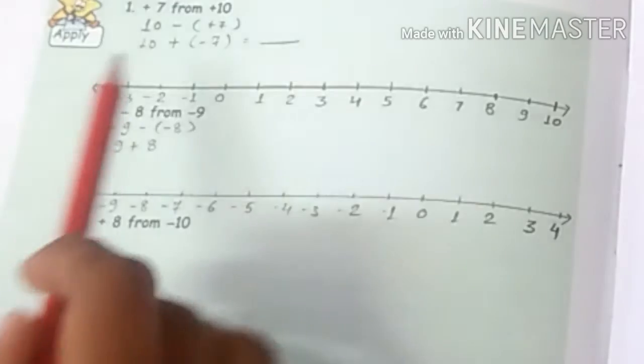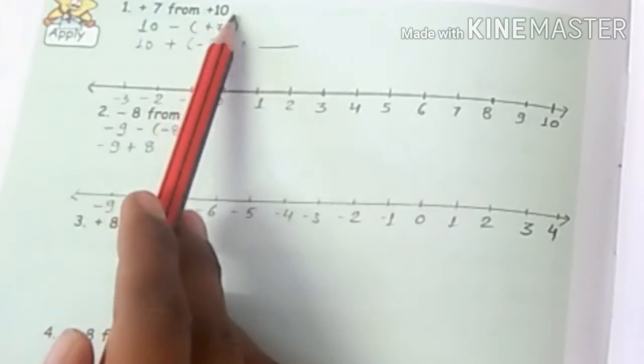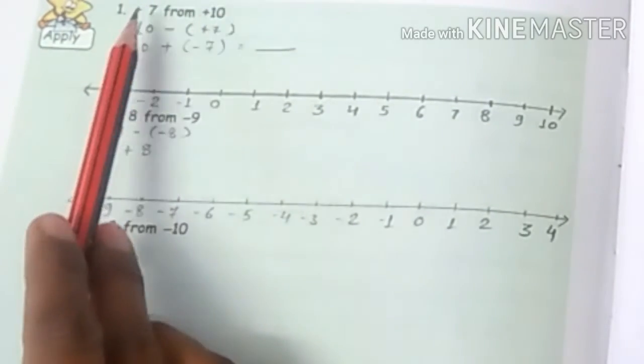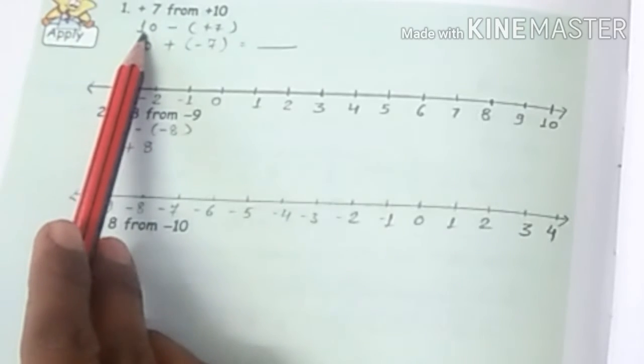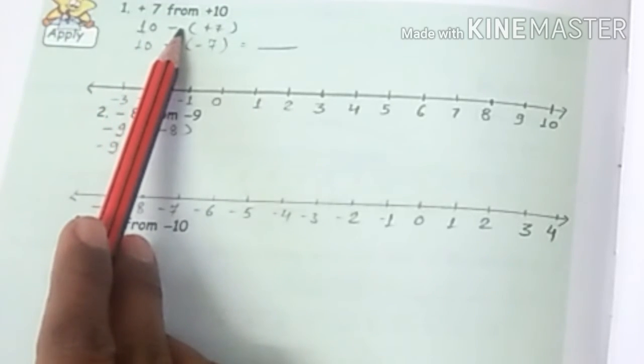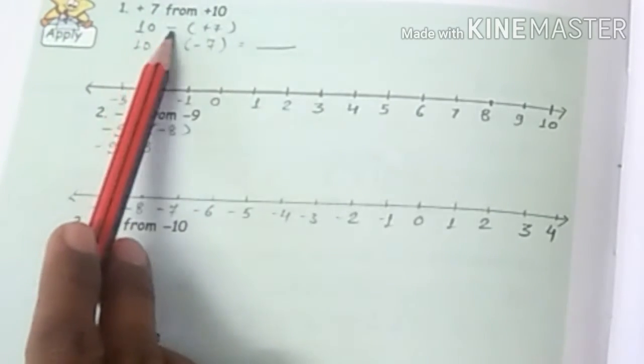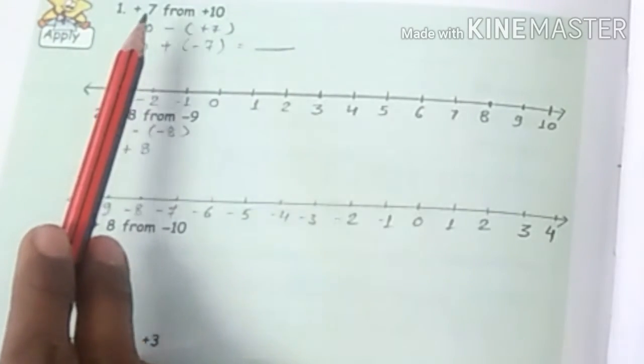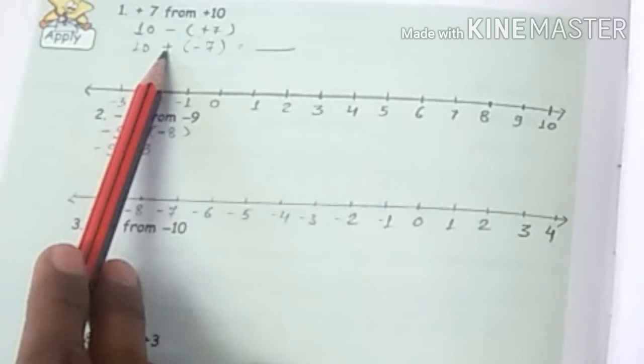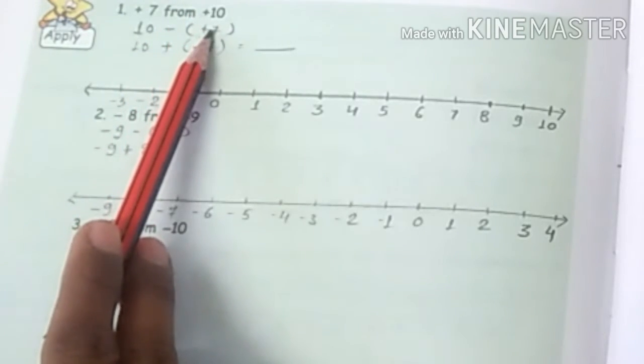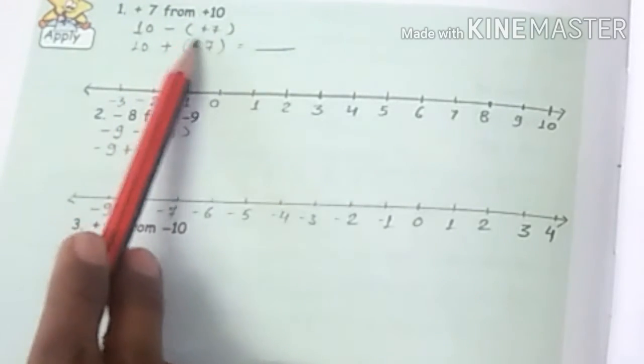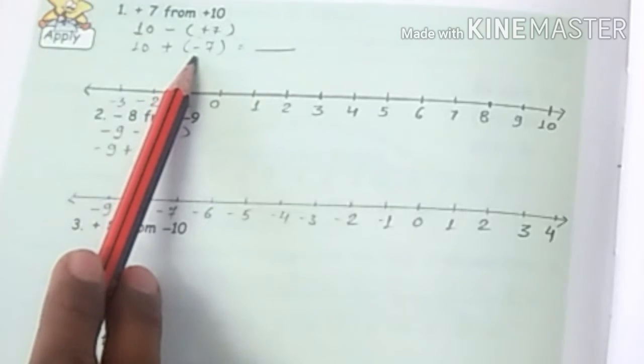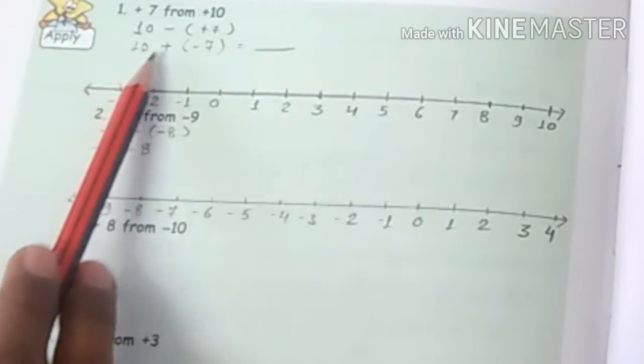Now let's do the apply part. Question number 1: plus 7 from plus 10. You have to do plus 10 minus plus 7. So first we have written 10, then minus sign because we are doing subtraction, plus 7. What is the rule? When you have to subtract, add the opposite of the first integer. The opposite of plus 7 is minus 7. First you have to go to plus 10.